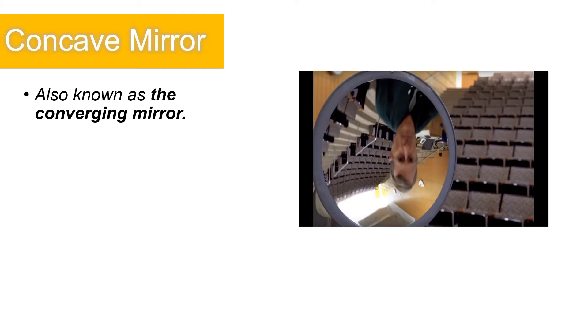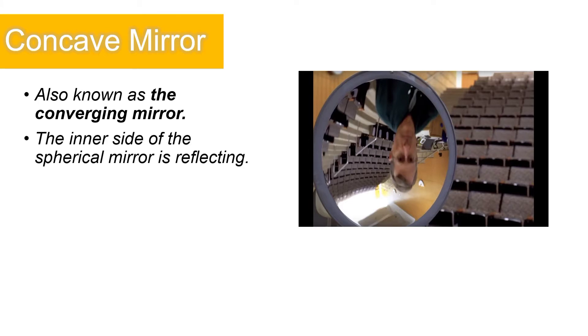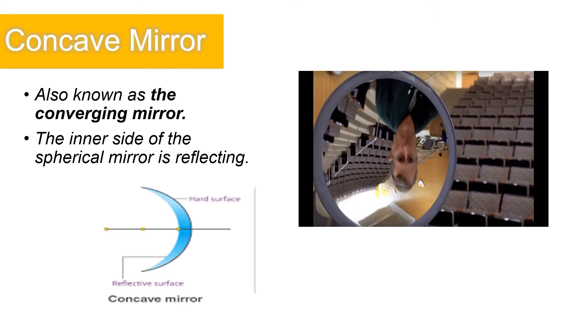The first type of curved mirror is what we call a concave mirror. It is also known as the converging mirror, and the inner side of the spherical mirror is reflecting. As you can observe, the person on the right who is looking in a concave mirror has an image that is upside down.